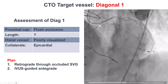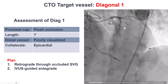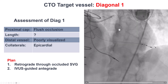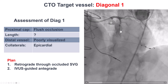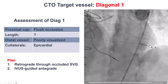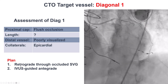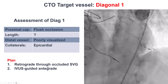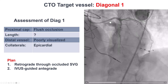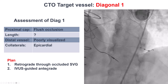Our plan was to try to recanalize the first diagonal CTO, the native vessel. We don't know exactly where it's coming from in the LAD, which has previous stents. We do see the distal vessel fill late through epicardial collaterals. Therefore, our plan was to try retrograde crossing through the occluded vein graft. And if that didn't work, try IVUS to see if we could locate the origin of the first diagonal.